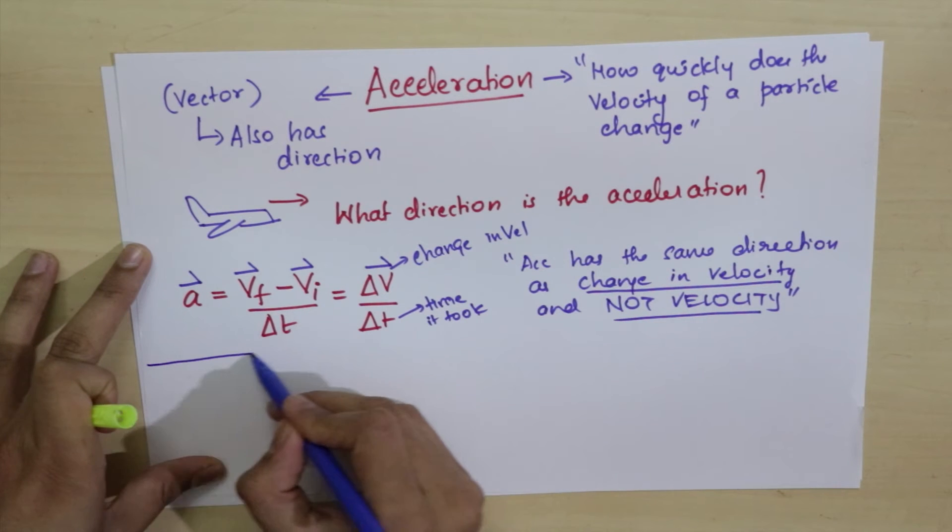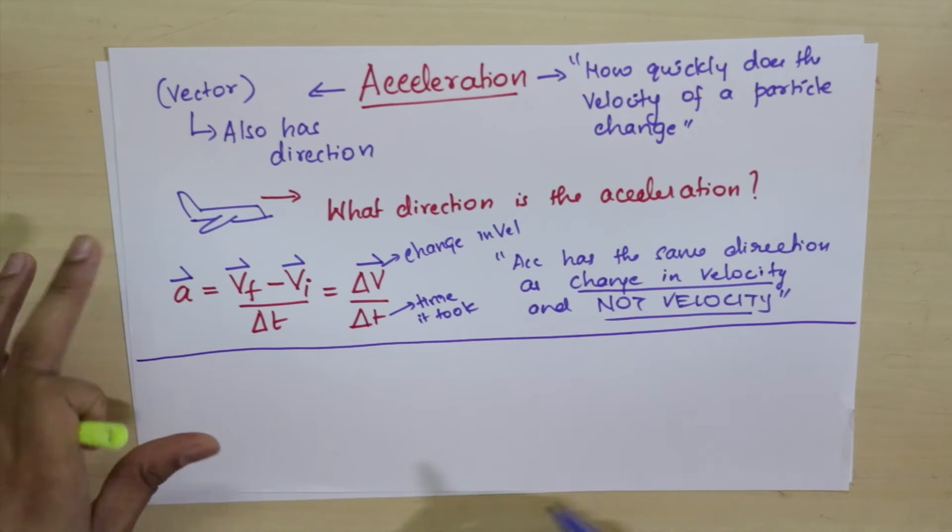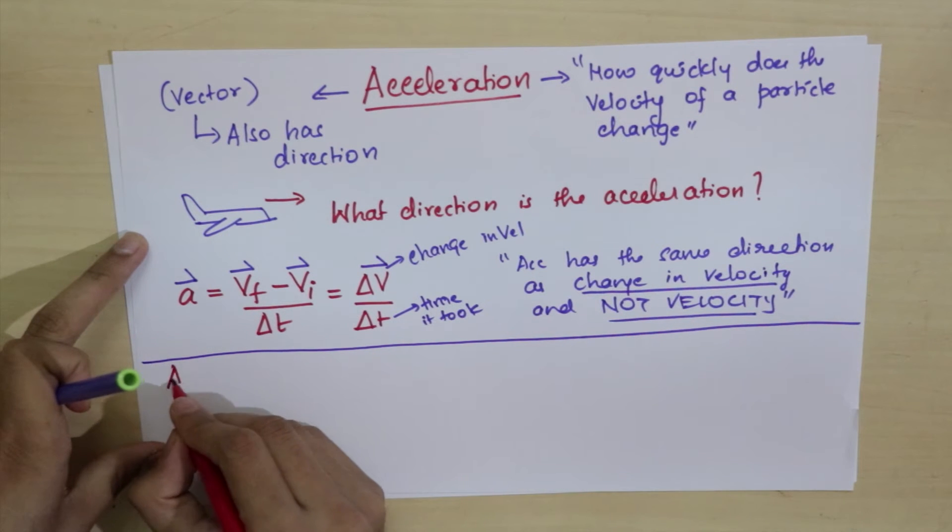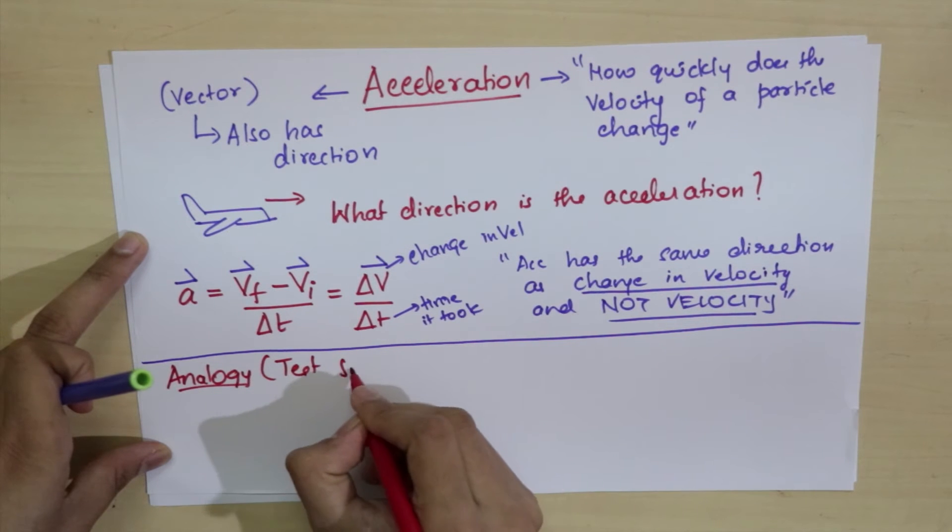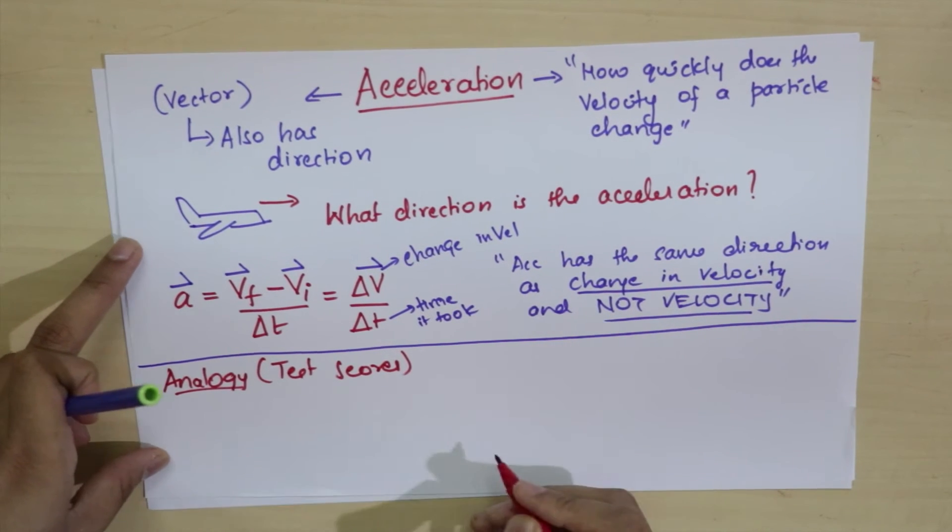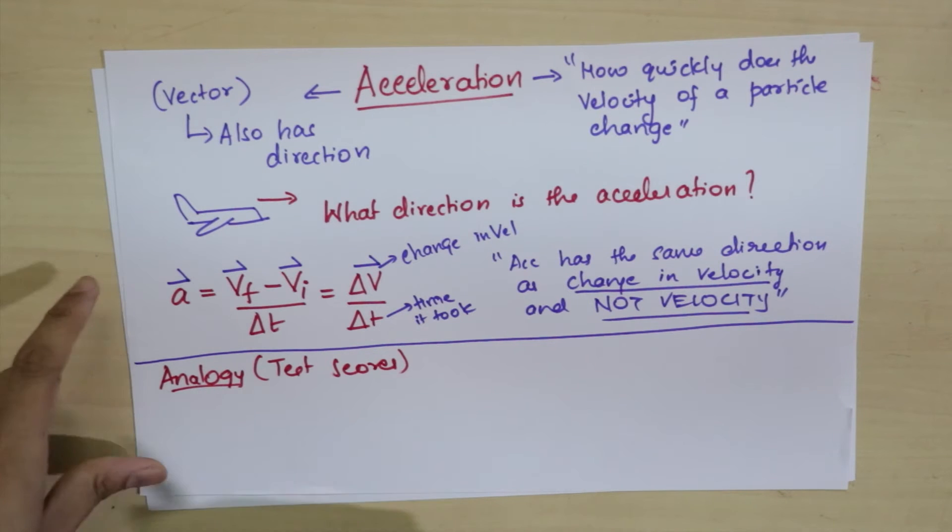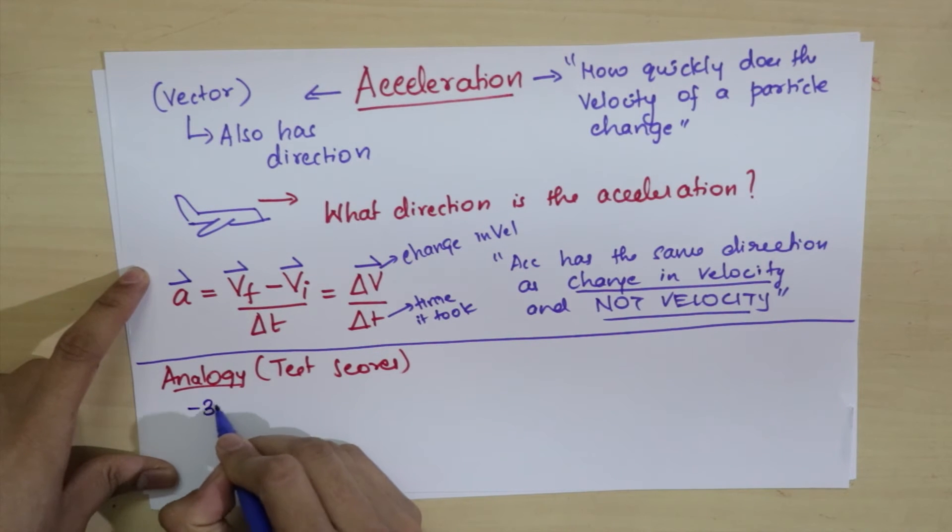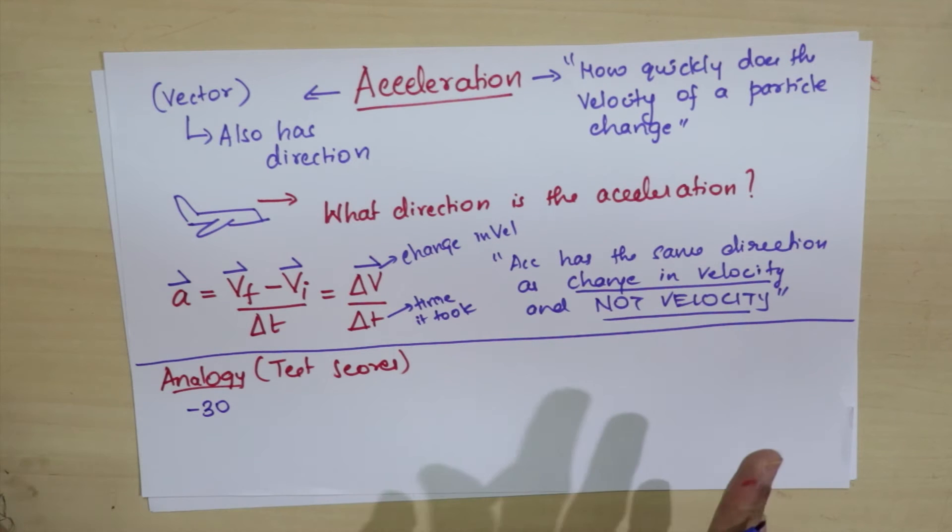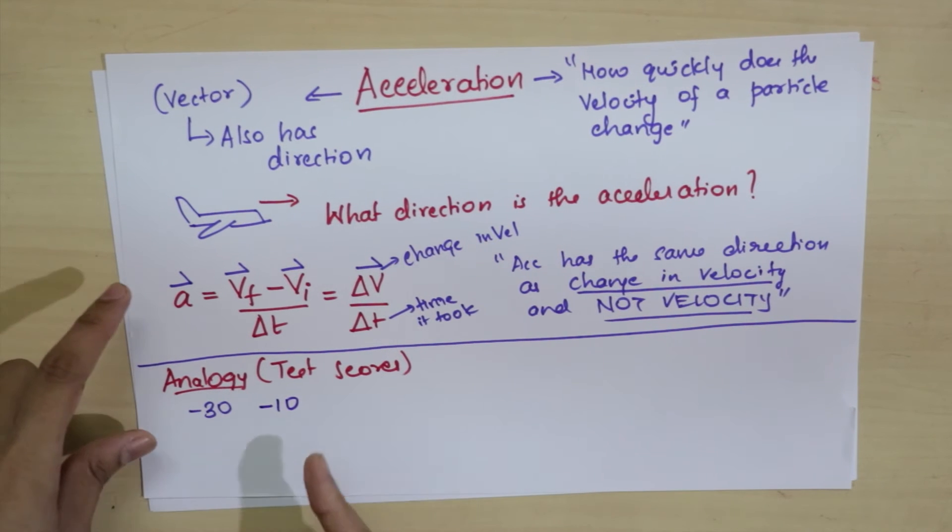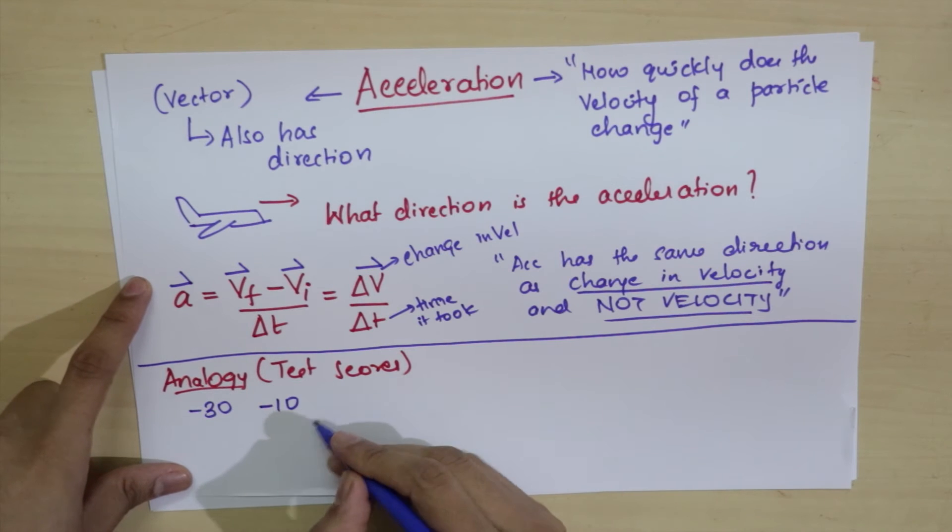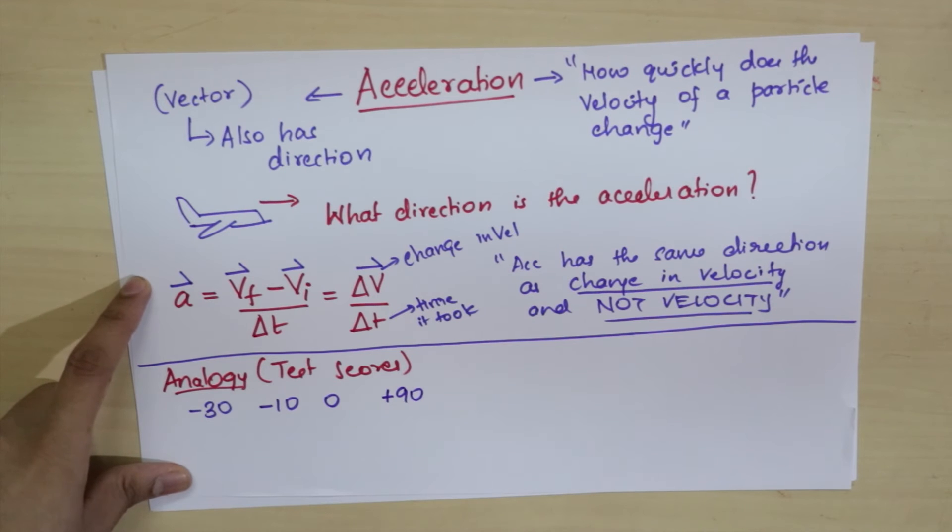To make you understand why they're not the same, let's take an analogy about test scores. Suppose you write a bunch of tests. The first one, you get minus 30 points. Then you read up and next time you get minus 10. It's still horrible, but much better than before. Next time you get 0, then plus 90.